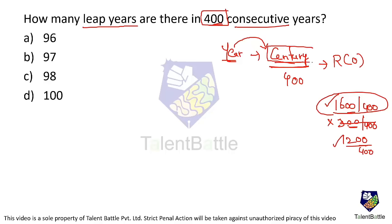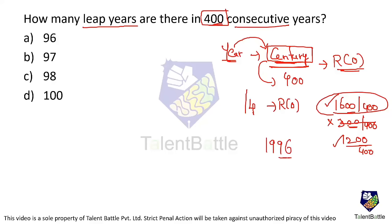So only in the case of a century do you divide by 400 and check whether the remainder is zero or not. For all other years — any year other than a century — you need to divide by four and check whether the remainder is zero or not. For example, 1996 is not a century because it doesn't end with zeros, so you divide it by four. Since 1996 is exactly divisible by four, that's a leap year.